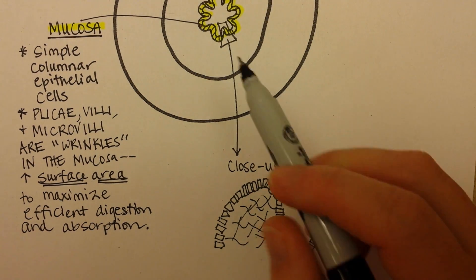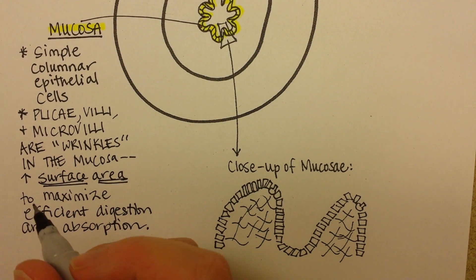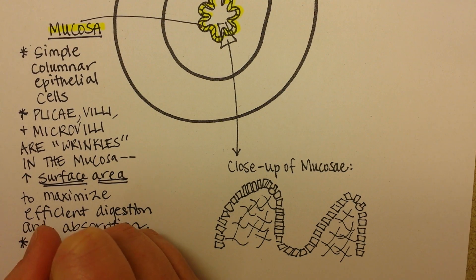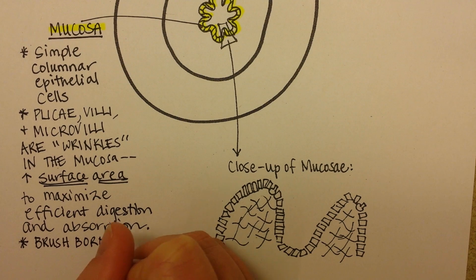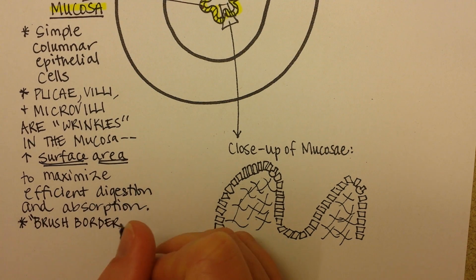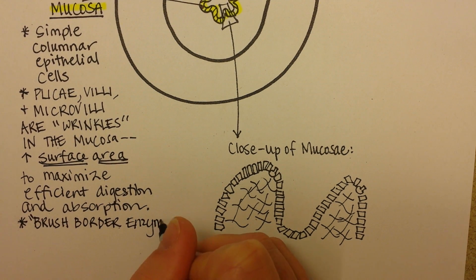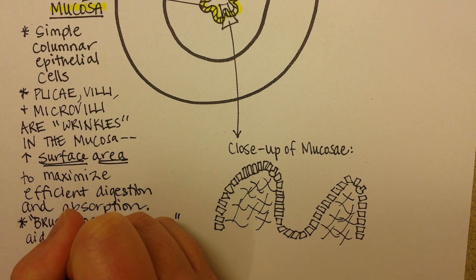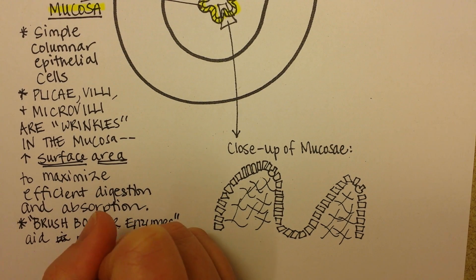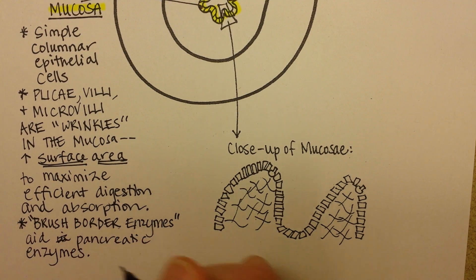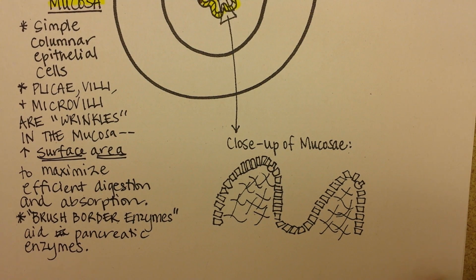There are some cells along this lining that contain brush border enzymes. It's called the brush border because it's so wrinkly — with all those microvilli it actually looks like the bristles on a brush. There are some important enzymes for chemical digestion that are actually attached to these cells, and these aid the pancreatic enzymes. I like to talk about the pancreas as the major place where the enzymes of chemical digestion come from, but these brush border enzymes help out with that.